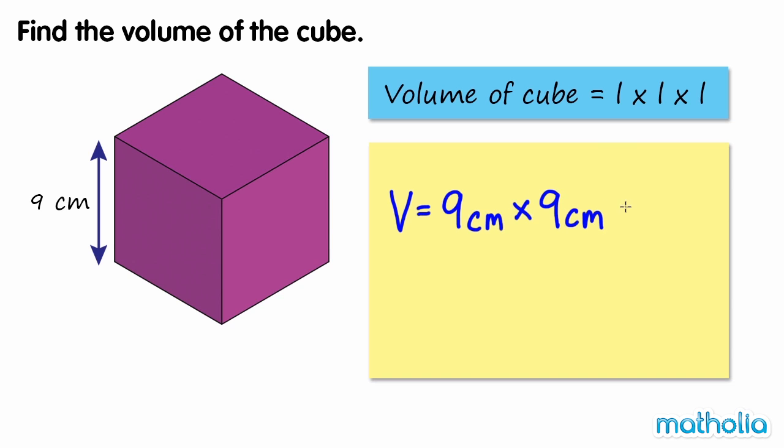9 centimeters times 9 centimeters times 9 centimeters equals 729 cubic centimeters. So the volume of the cube is 729 cubic centimeters.